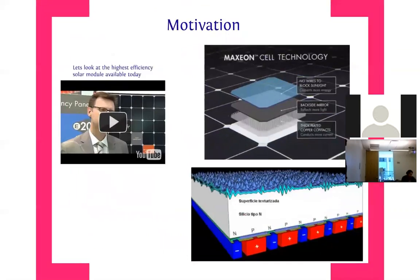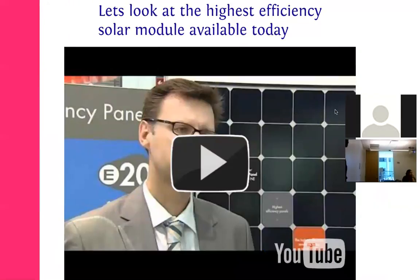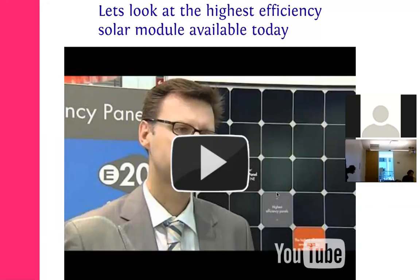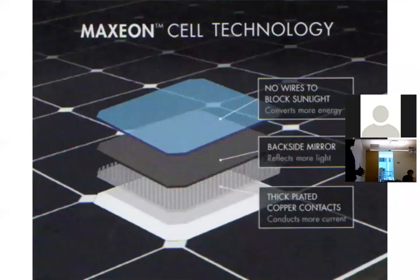Before we go into that, let's go through the motivation. I'll post a link to a video on our website. It gives you an idea of what the highest efficiency solar module available today looks like. This is the module from SunPower — this particular one from Germany — which has an efficiency of about 22 percent at the module level, which is kind of the world record. They have the Guinness Book of World Records efficiency.